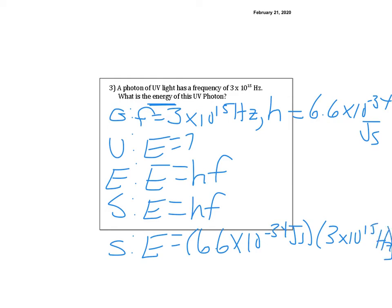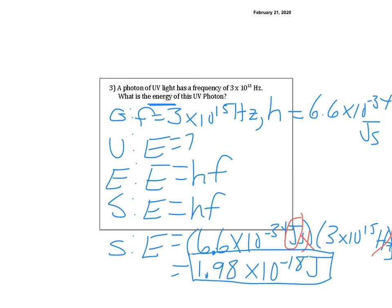A Hertz is 1 over seconds, so seconds cancels with the Hertz, leaving joules. In the calculator: 6.6 EE negative 34 times 3 EE 15. If entered correctly, the answer is 1.98 times 10 to the negative 18th joules. That might not sound like much energy, but that's just one little photon — one little bundle of light — and it has 1.98 times 10 to the negative 18th joules.